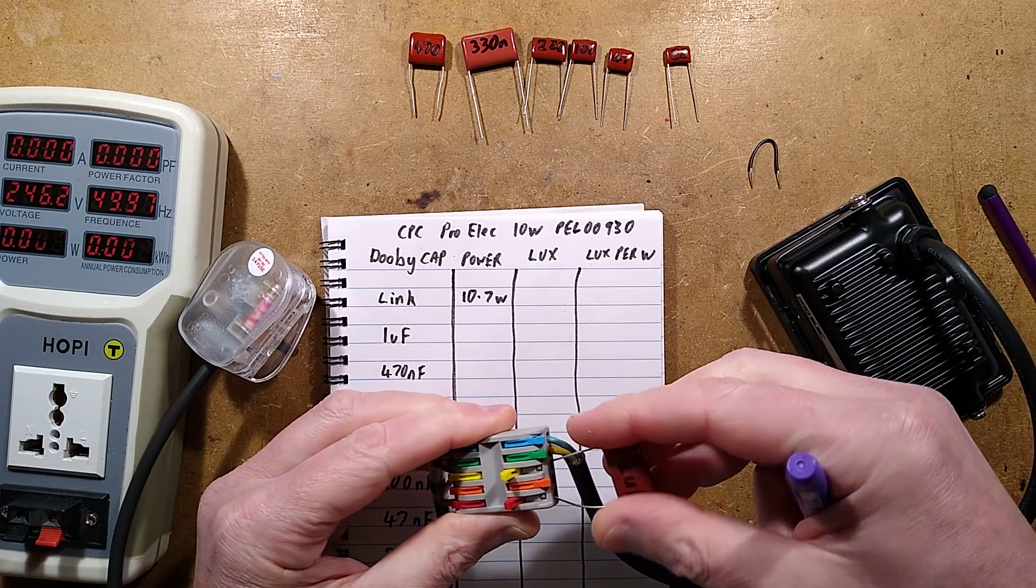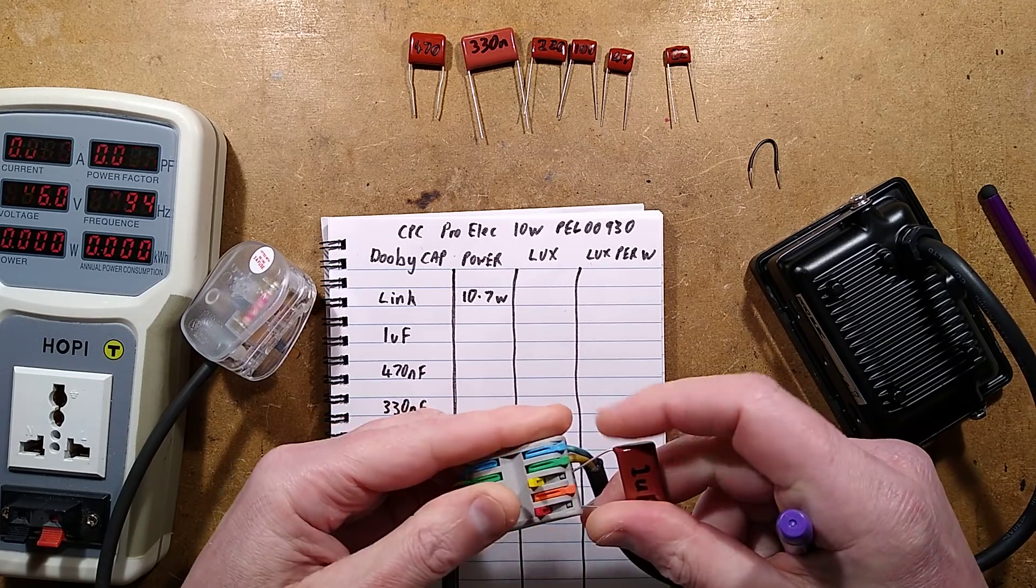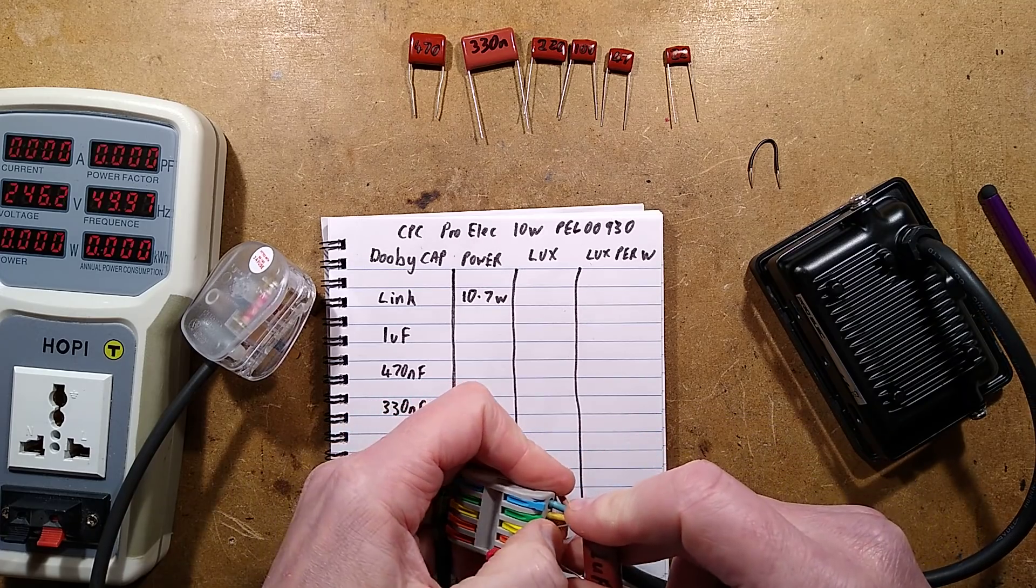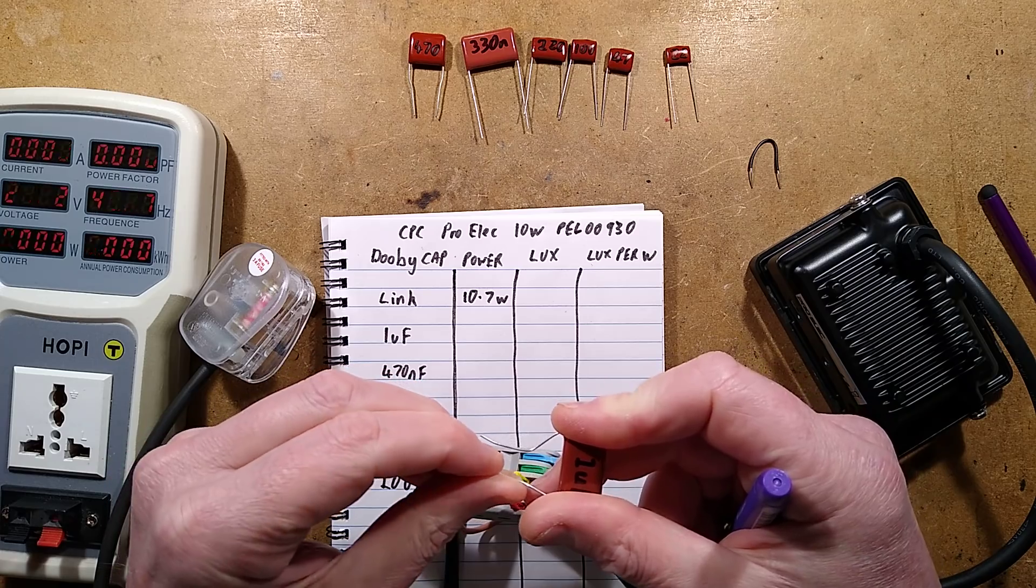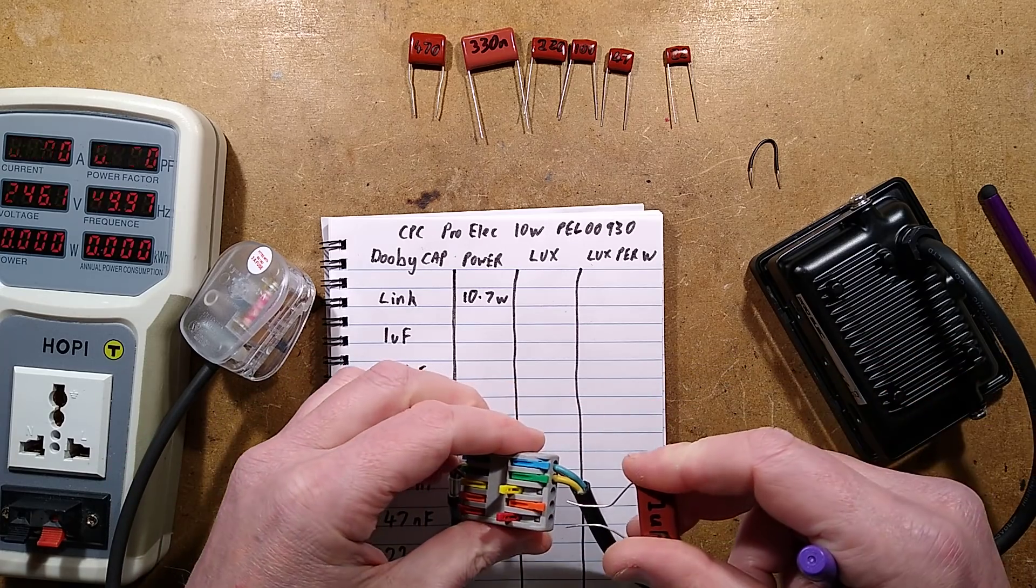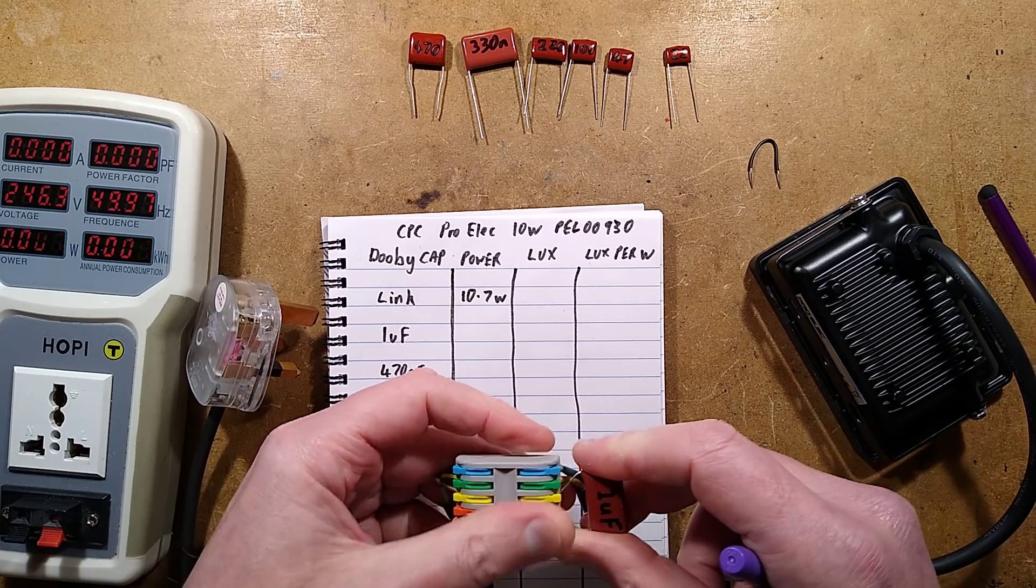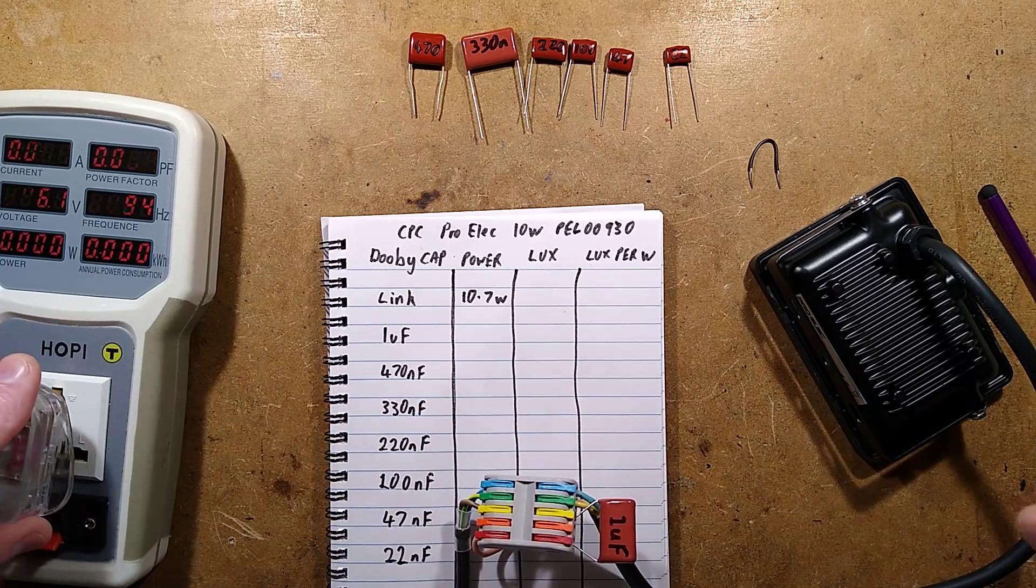I'm going to have to remember to discharge these. I was trying to find my other little doobie set up. I couldn't find it. And it has the discharge resistor built in. Let's actually put these wires in correctly, shall we? Let's bend them a bit like that. So I'm going to have to remember to discharge these. Otherwise, it's going to be quite zappy. Okay, so that's the one microfarad capacitor in series with the light now.